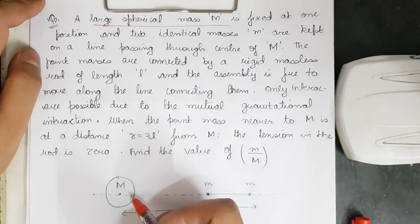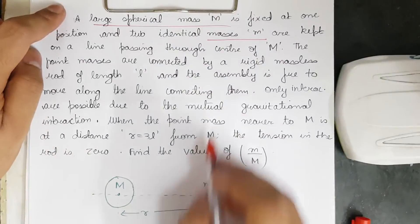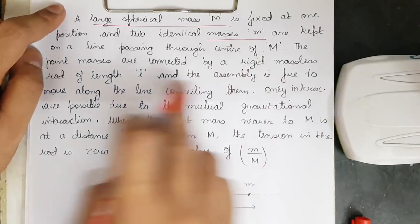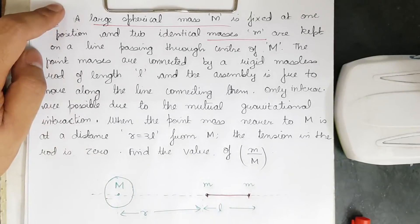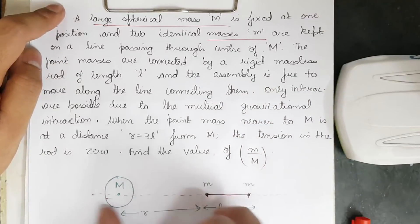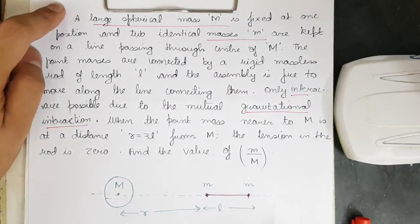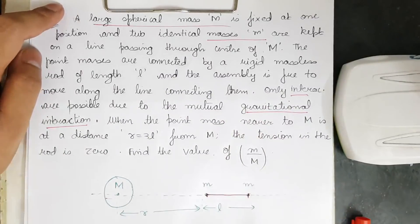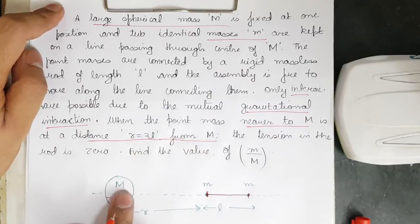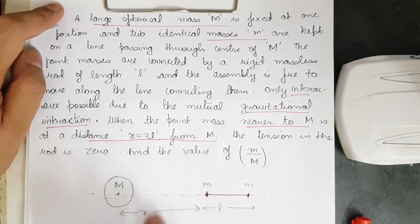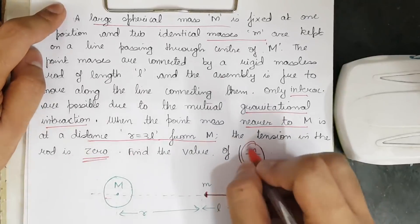In the second question, we have a large spherical mass M fixed at a position, and two identical point masses m kept on a line passing through the center of M. The point masses are connected by a rigid massless rod of length l. The assembly is free to move along that line — only horizontal motion is possible, and only mutual gravitational interactions are present. When the point mass nearer to M is at distance r = 3l from M, the tension in the rod is zero. We need to find the ratio m/M.